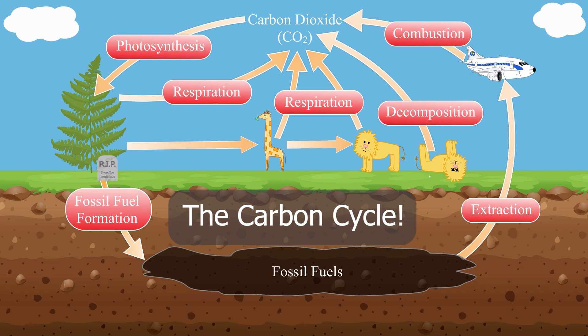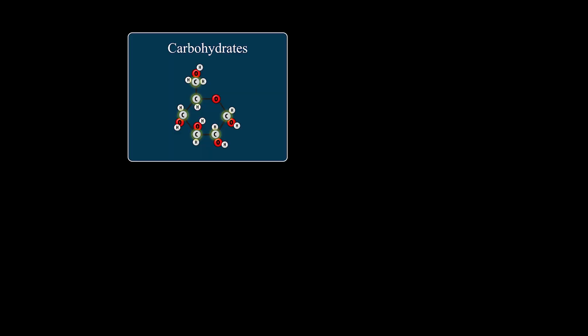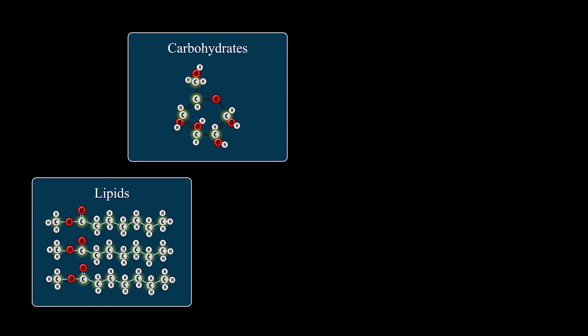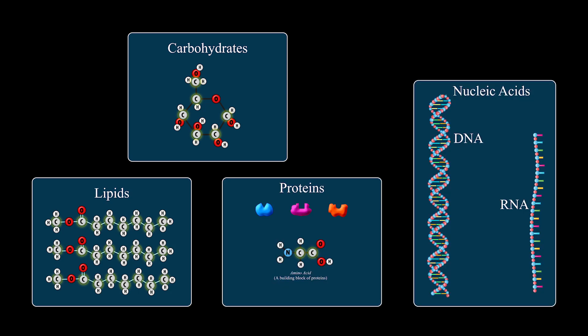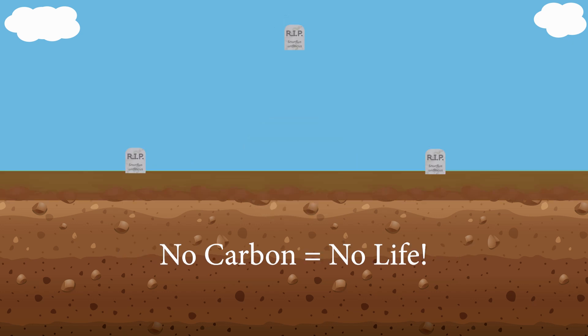The carbon cycle is crucial for all life on earth, because carbon is needed to make every single organic molecule needed by living things. This includes carbohydrates, lipids, proteins, and nucleic acids. Because carbon is so necessary, we often say that life on earth is carbon-based. Without carbon, there would be, literally, no life as we know it. So, the carbon cycle is a really important cycle.